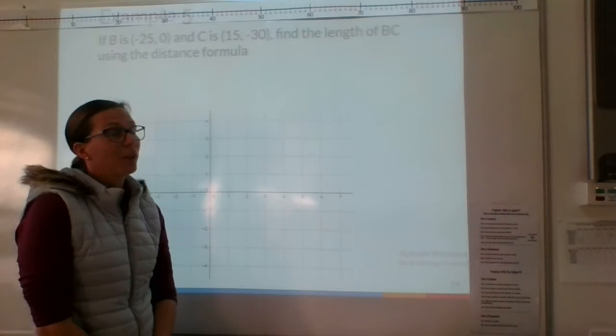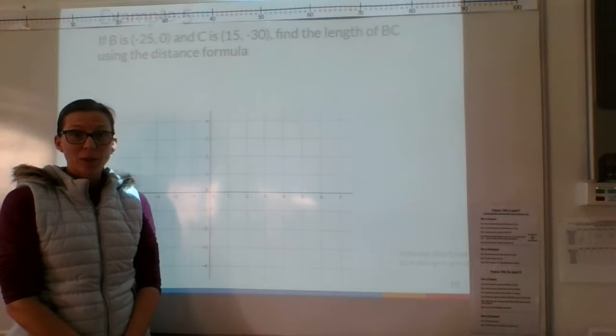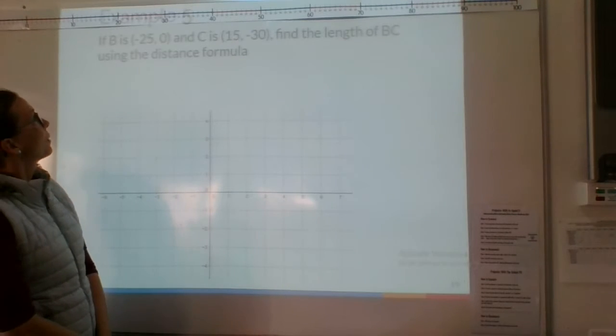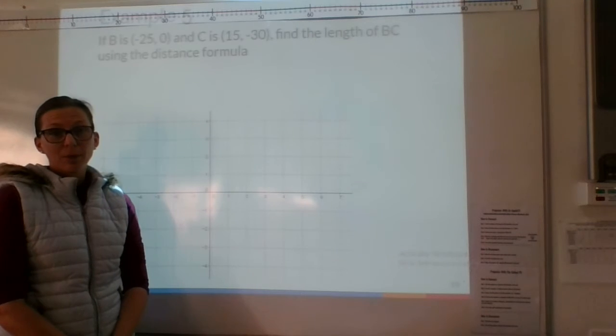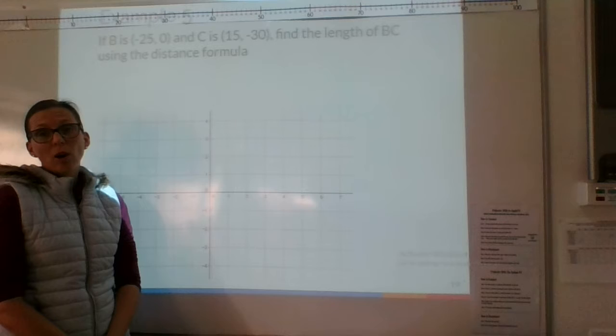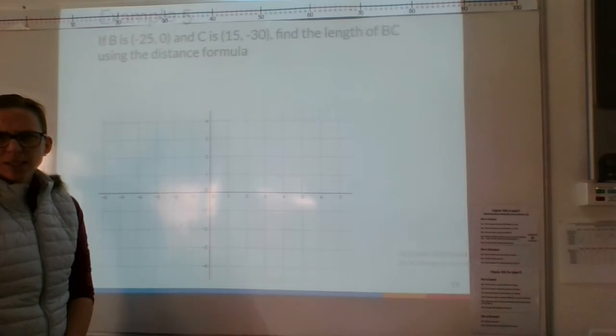So here I'm going to have another go at using the distance formula to find the distance between two points. So here are my points. I have B at the coordinate negative 25 comma 0 and C at the coordinate 15 comma negative 30. So find the length of BC using the distance formula.